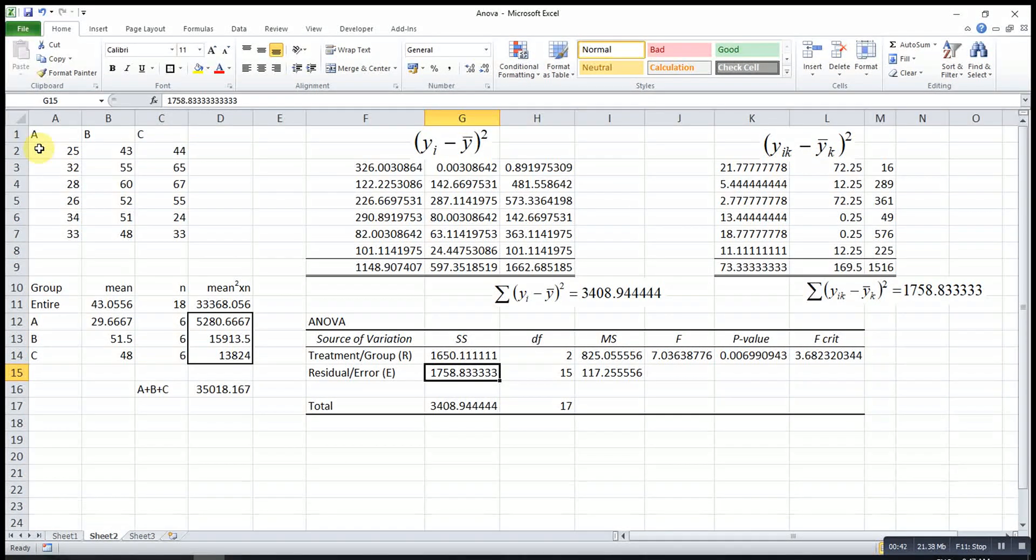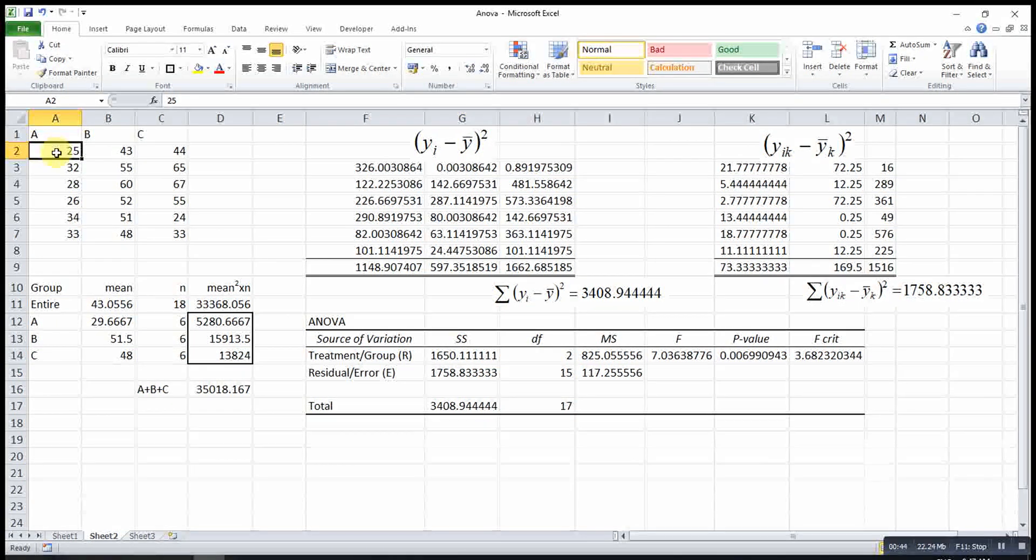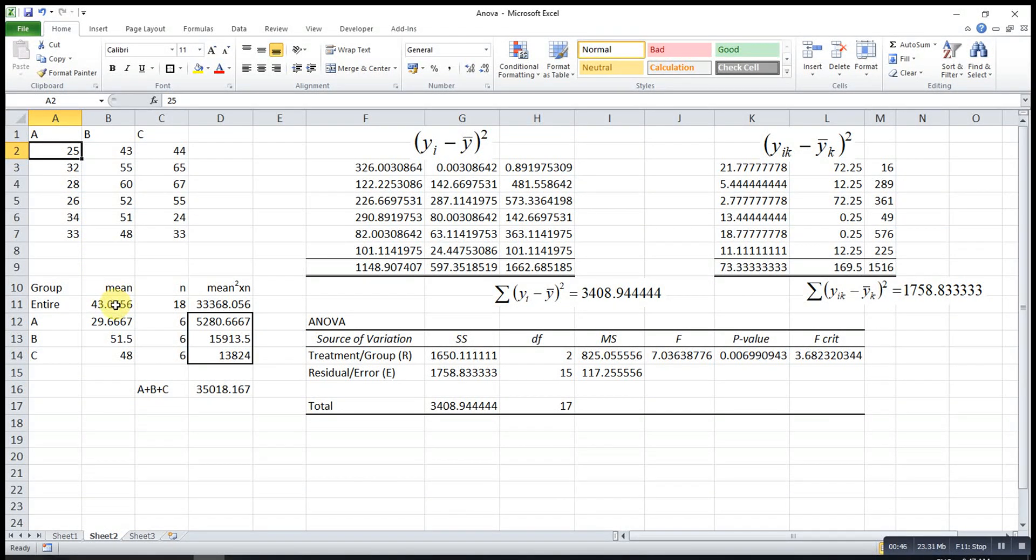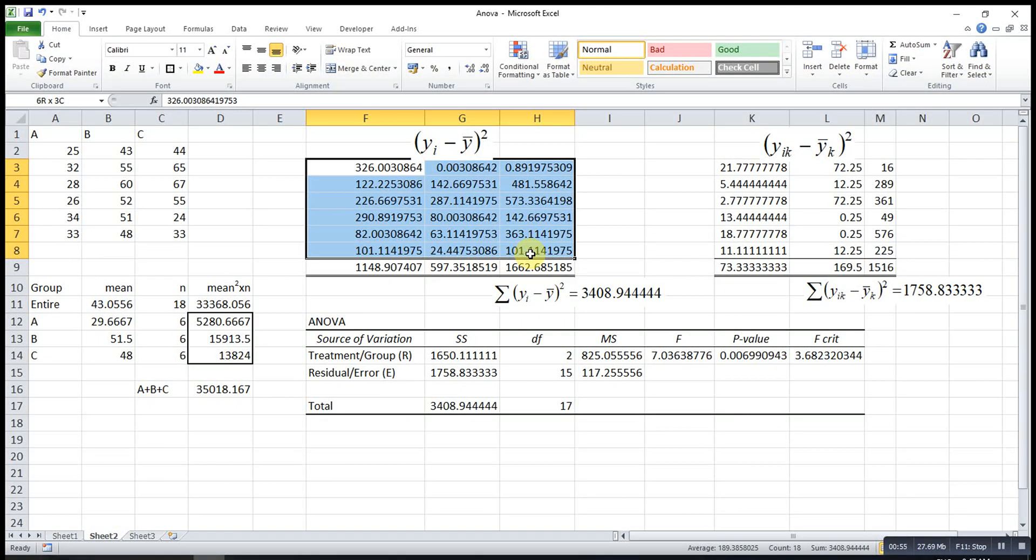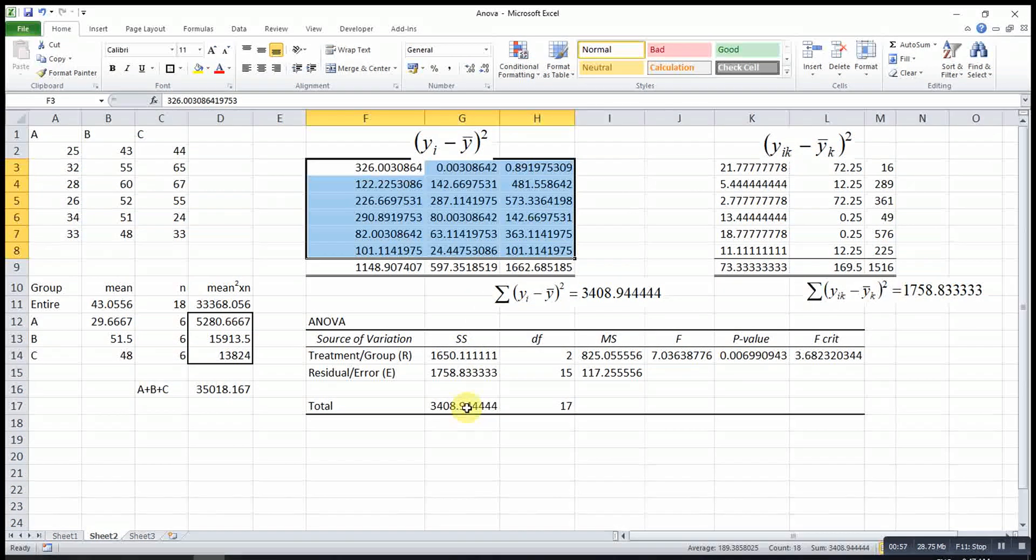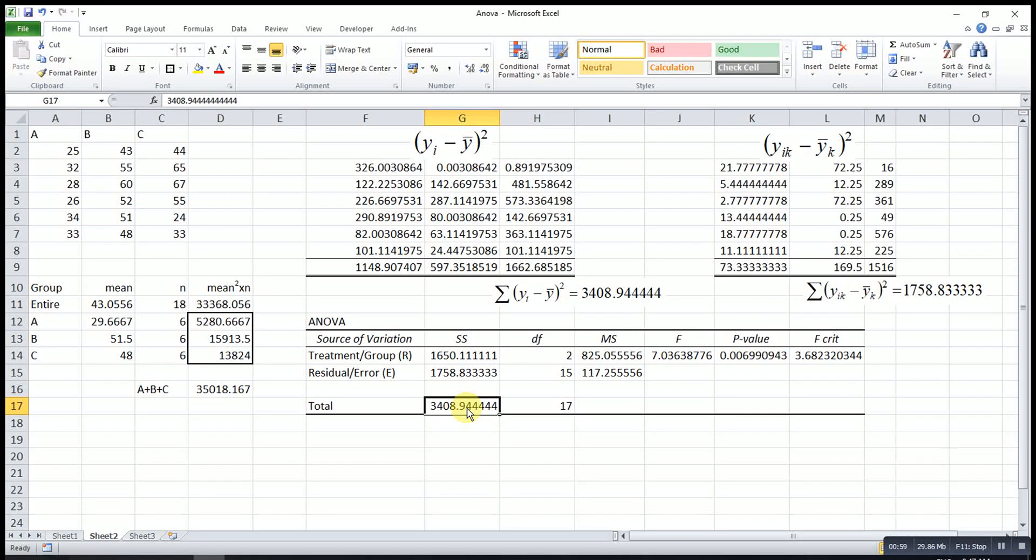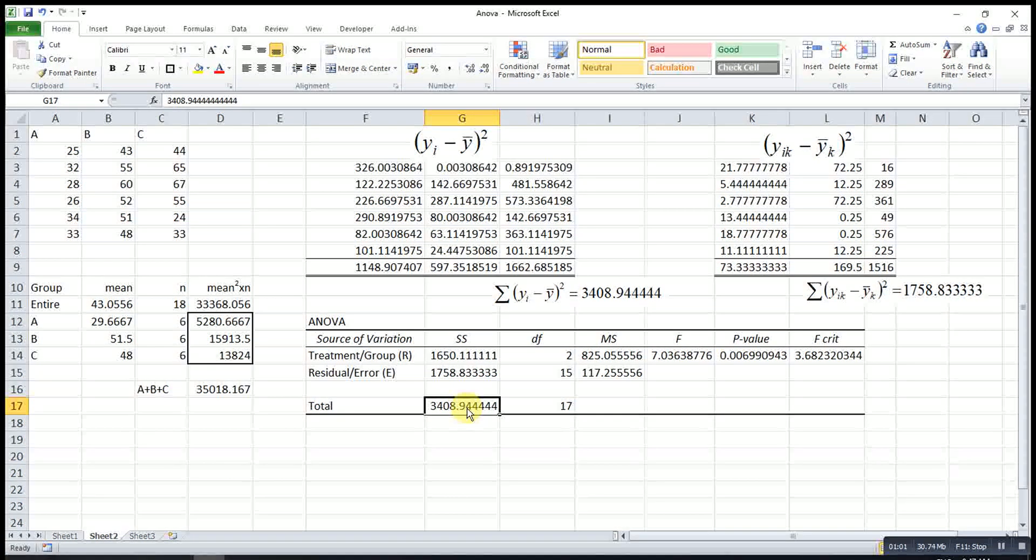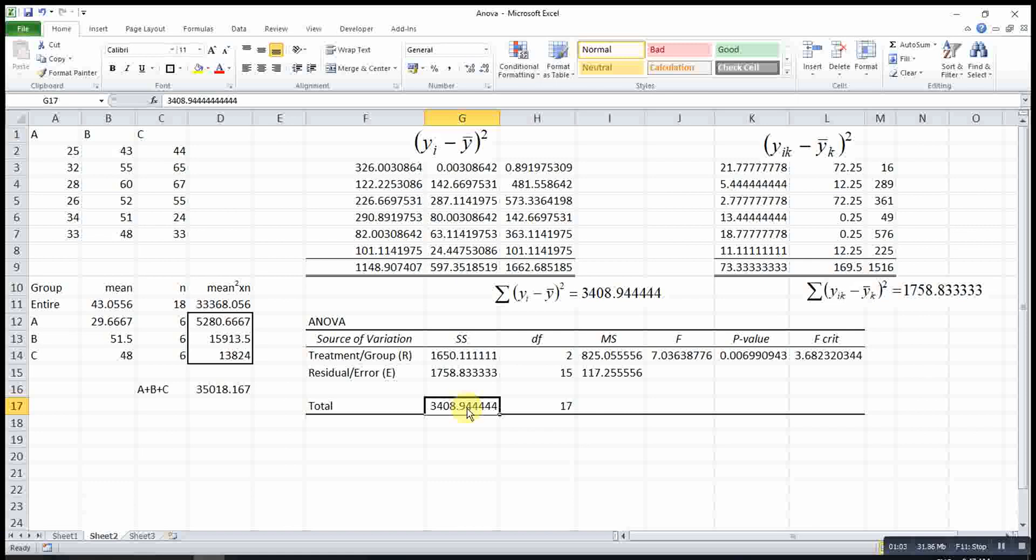Then we also take each individual value minus the mean value for the entire group, then square, to get the square error for the entire group. We take the sum of these values to get the sum of square total, or SST.